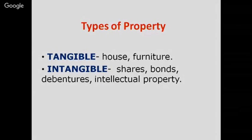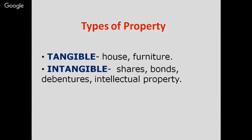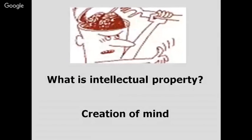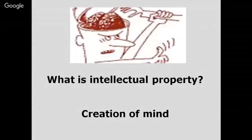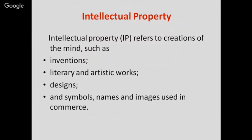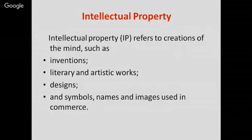By acquiring legal rights over intellectual property, the creator seeks to ensure exclusive rights over it, which can be used by others only after his or her consent. Property can also be categorized as tangible — like a house, furniture, or land — or intangible — like shares, bonds, debentures, or intellectual property. Intellectual property is a creation of the mind and we require protection from infringement, which is where intellectual property rights come into view.